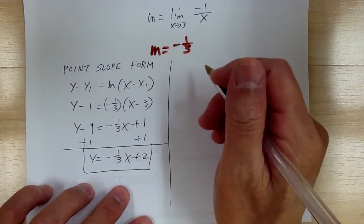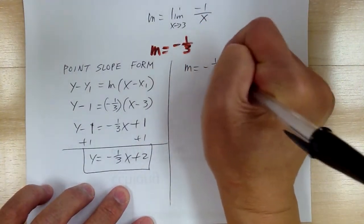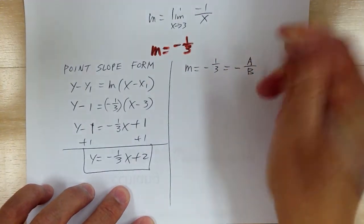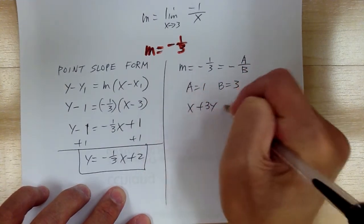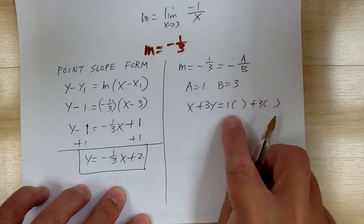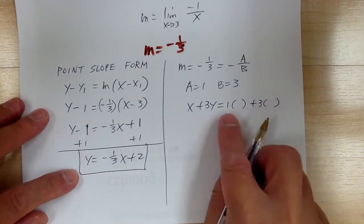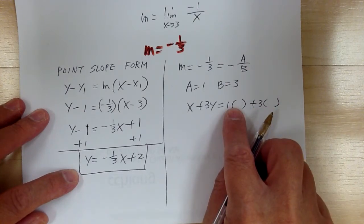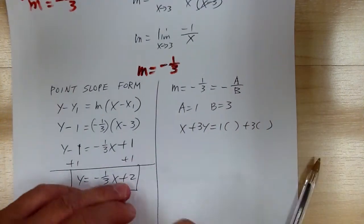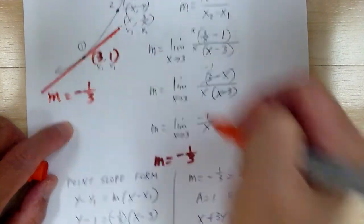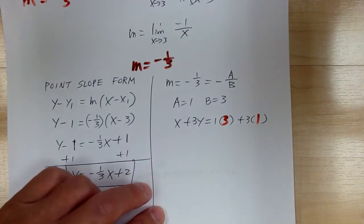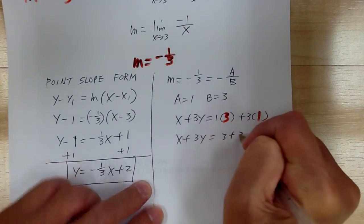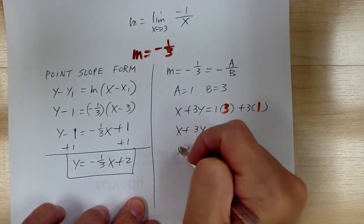Another method uses a and b. Slope equals negative 1/3, which equals negative a over b, so a = 1 and b = 3. Then 1x plus 3y equals 1 times (x-coordinate) plus 3 times (y-coordinate). The point on the line is (3, 1), so substituting gives x plus 3y equals 3 plus 3, so x plus 3y equals 6. That's your standard form.